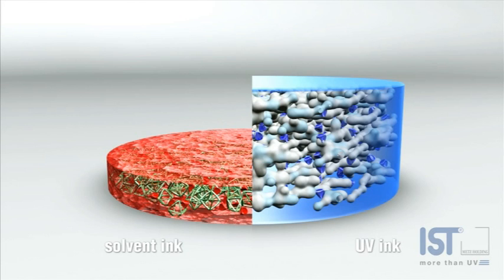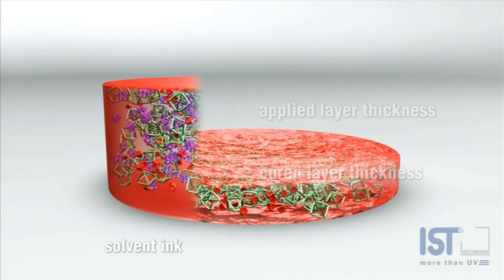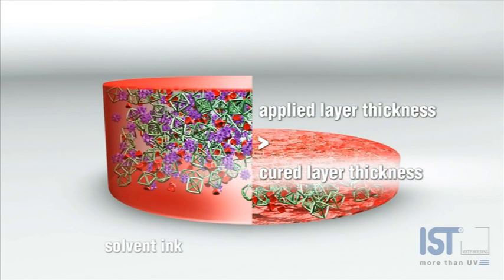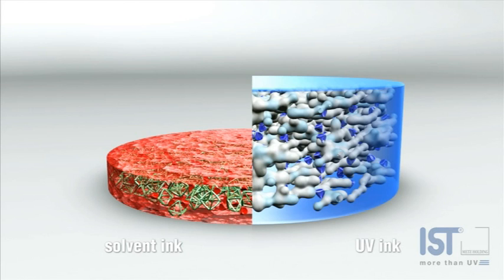Unlike conventional inks, UV inks do not contain elements that oxidize or evaporate. On the contrary, all the constituents of UV inks are directly involved in the polymerization process. In this way, the UV ink is retained 100% in the dried coating.